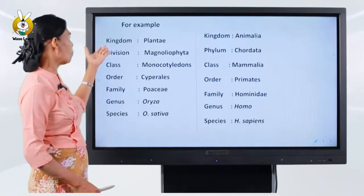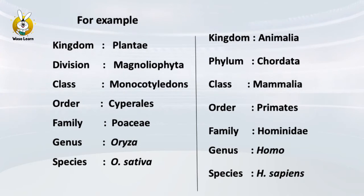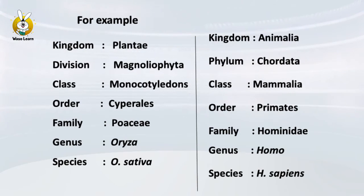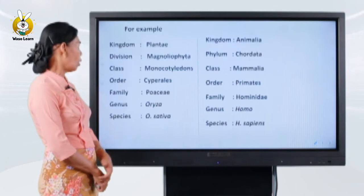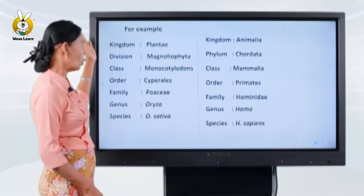We can use a classification example with a plant: we can use Magnoliophyta, Monocotyledons, Cyperales, Poaceae, genus Oryza, species sativa. This is a classification of Oryza sativa, from the kingdom Plantae, division Magnoliophyta, class Monocotyledons, order Poales, family Poaceae, genus Oryza, species sativa.